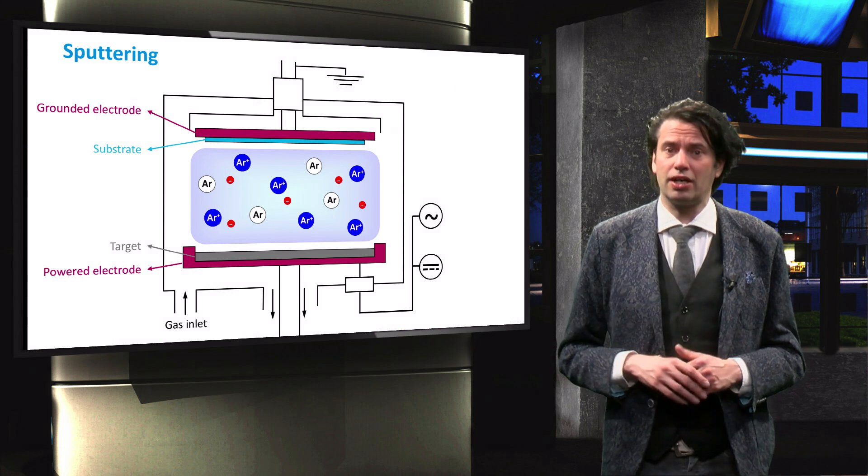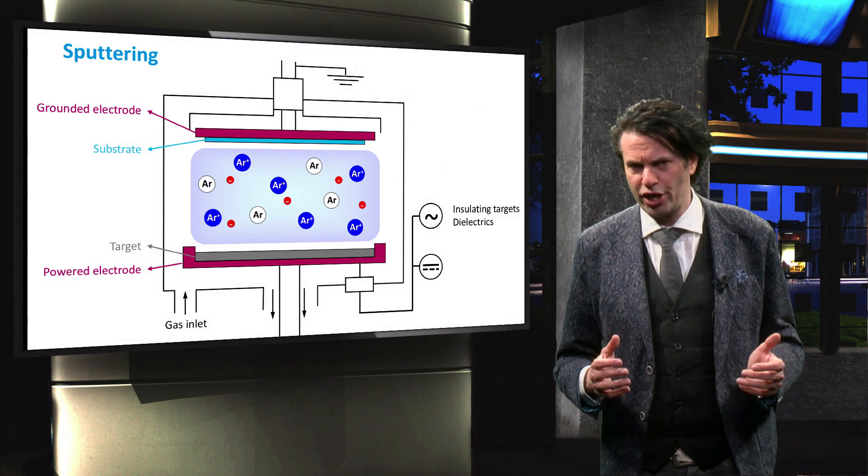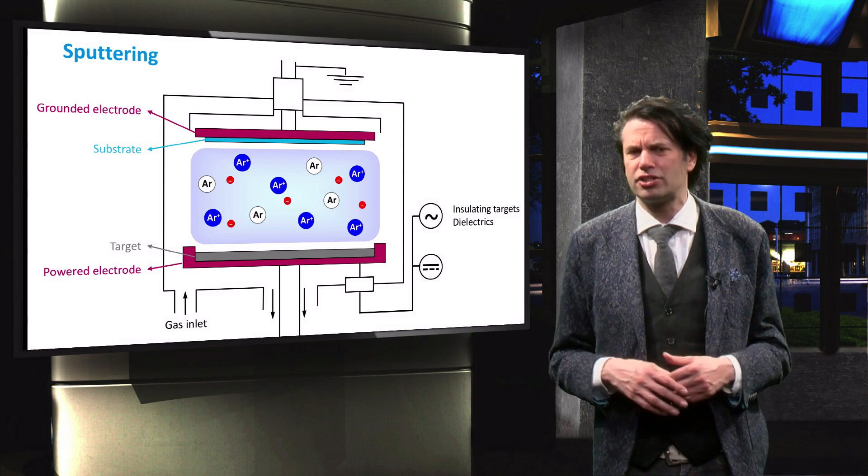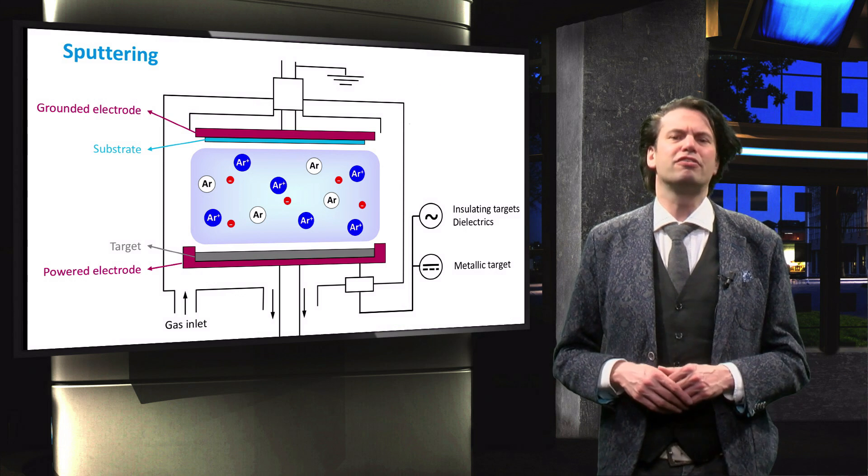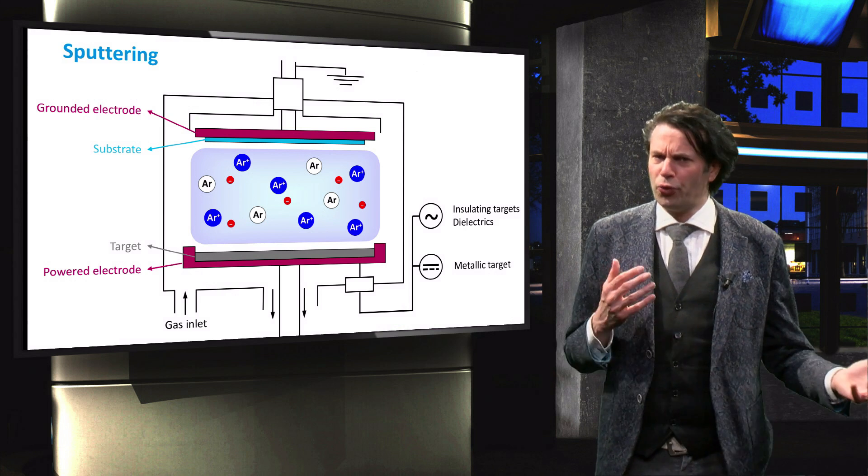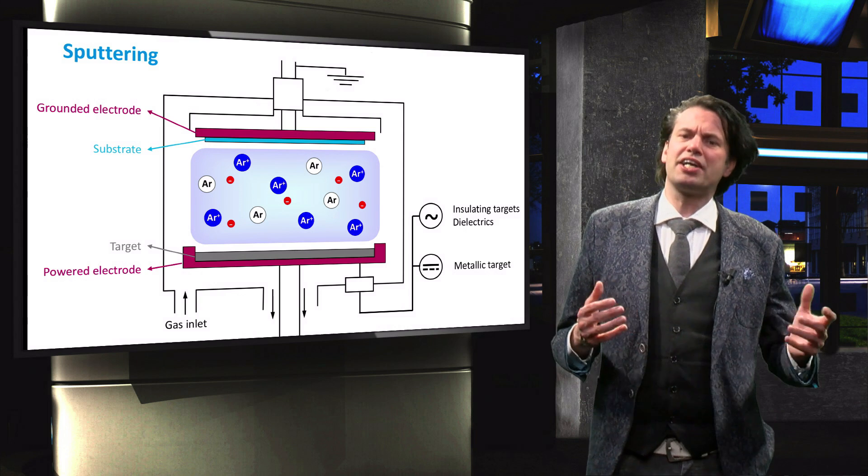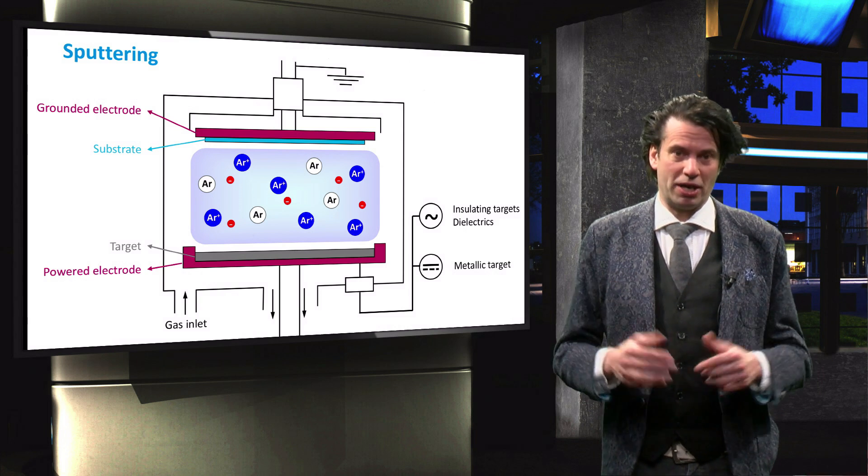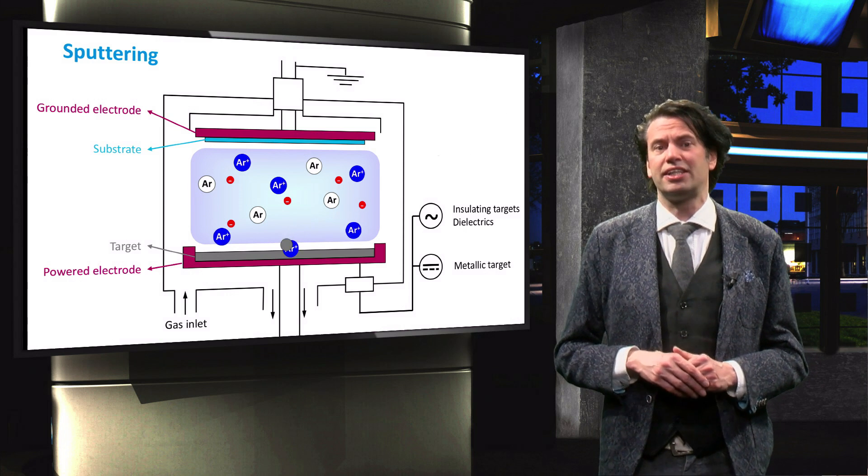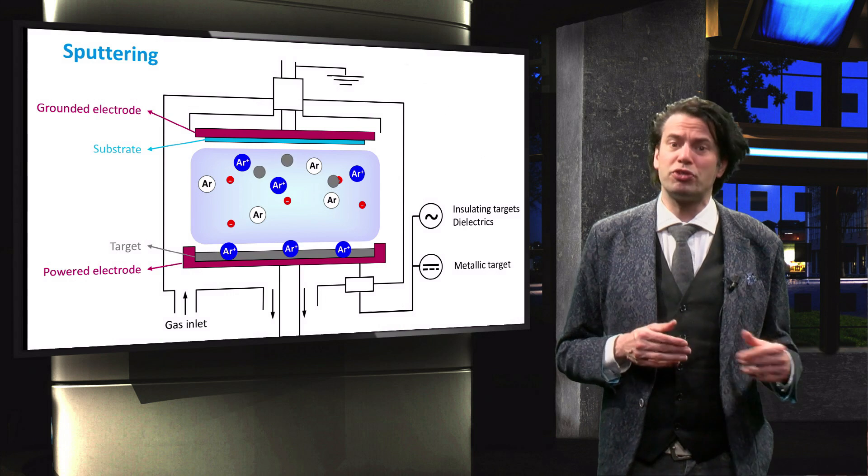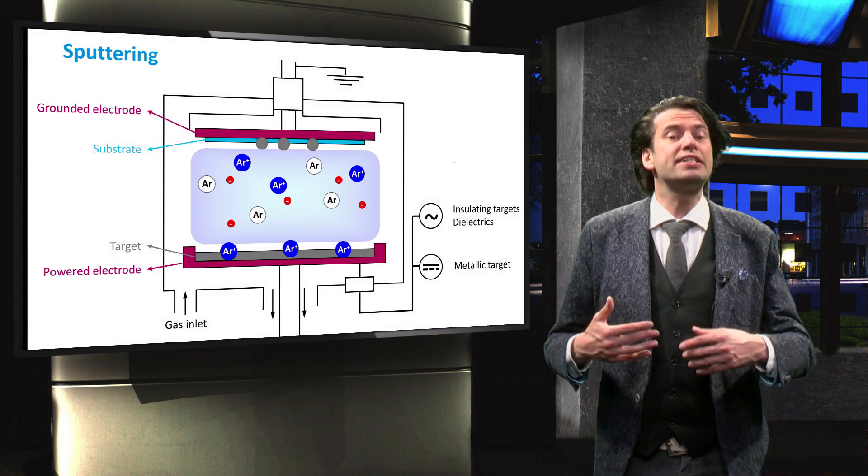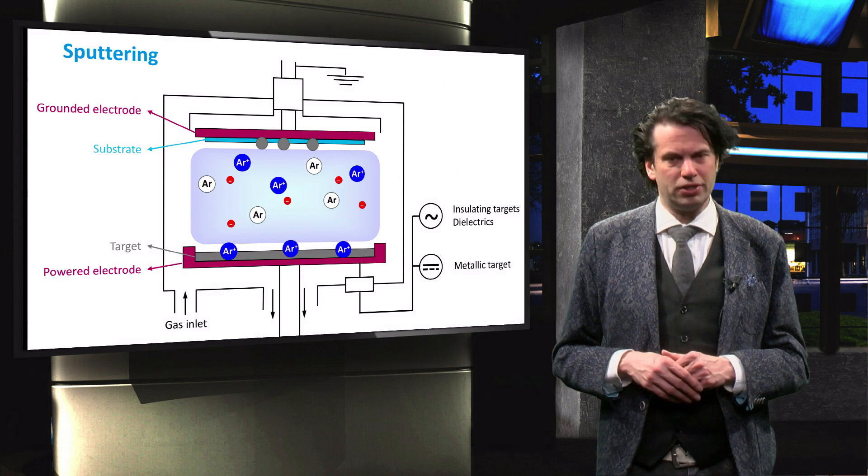For a metallic target, often a DC bias is used. For insulating targets and dielectrics, an AC bias is required, as we explained in the preceding video. Through collisions in the plasma, the argon ions gain energy and momentum. The positively charged argon ions hit the target surface, which has a negative bias with respect to the plasma, releasing atoms from the target material.